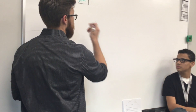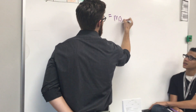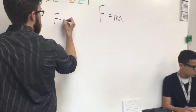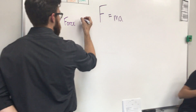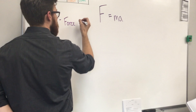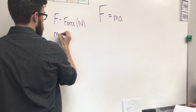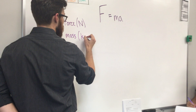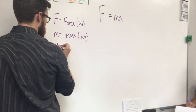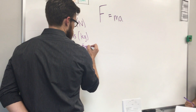This workshop is on force calculations. The formula we're going to be working with is F equals MA. F stands for force, which is a push or a pull that causes motion. The unit for force is newtons. M stands for mass, and the unit of mass is kilograms.